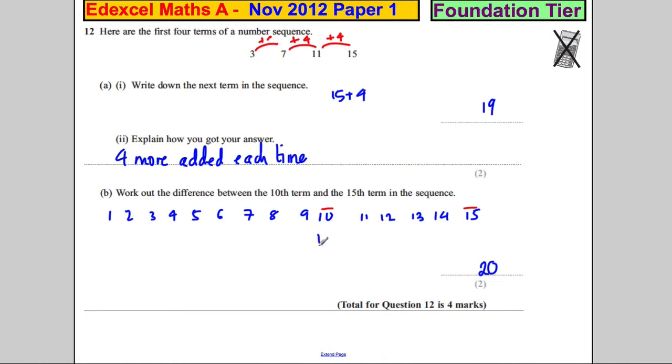So you don't have to do all that adding. But you can think to yourself, whatever this number is, the tenth number, I add on four, so this one's four bigger. This one's another four bigger, so eight bigger. This one's another four bigger, so 12 bigger. This one's another four bigger, 16 bigger. And this one's another four bigger, 20 bigger. So the difference is 20.